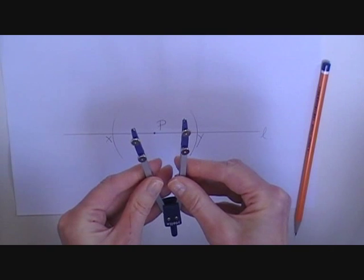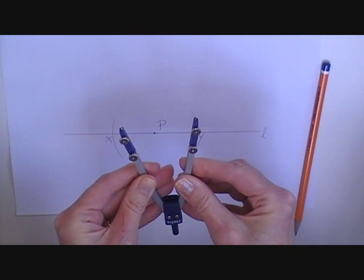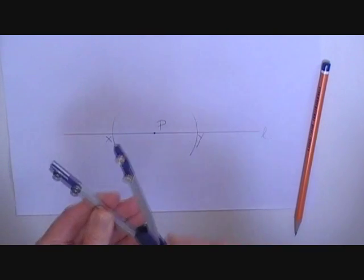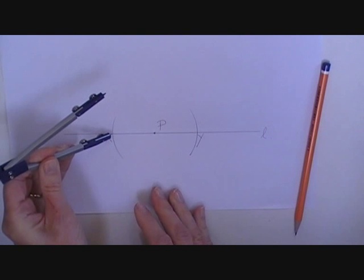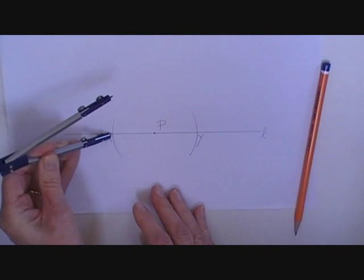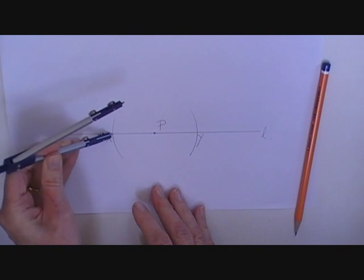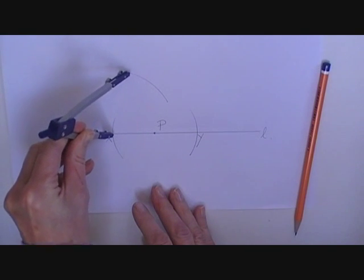I'm going to stretch out my compass a bit more so I've got a larger radius. I put the point of the compass on X and spin around above P to form an arc.